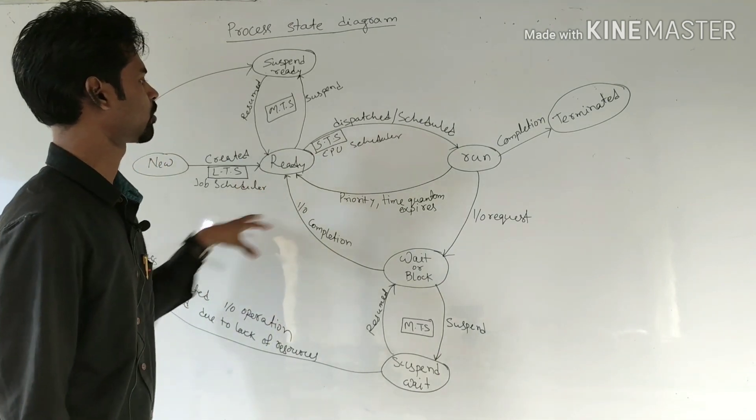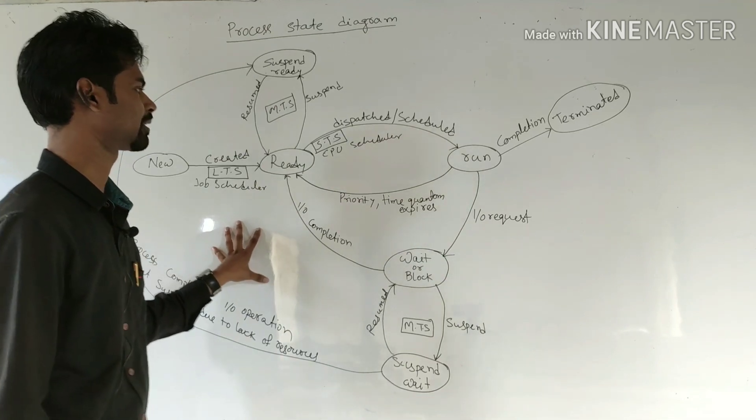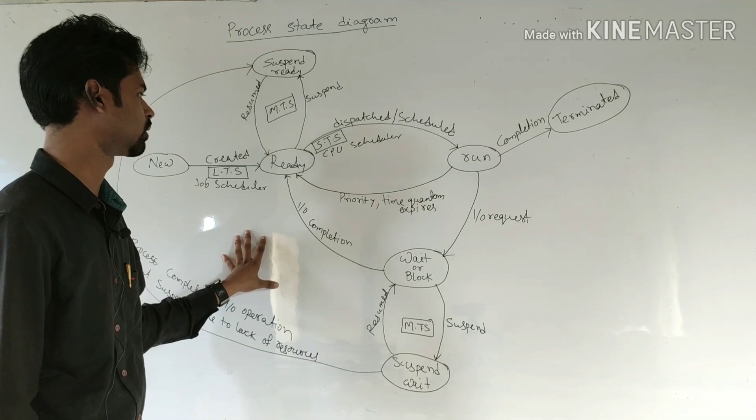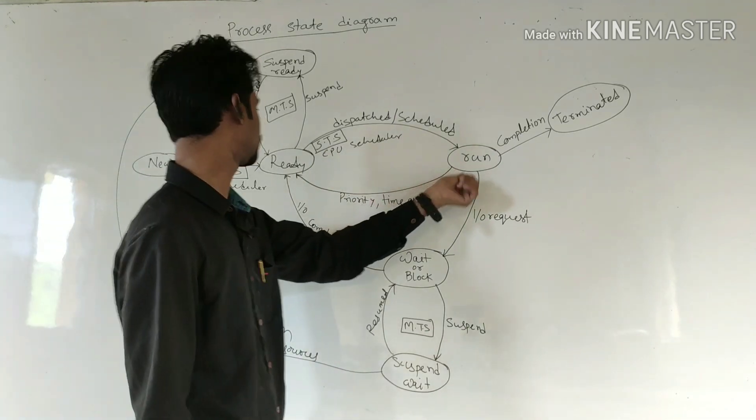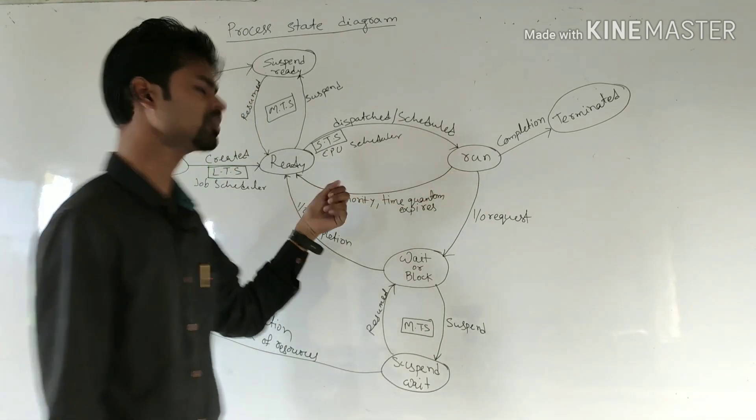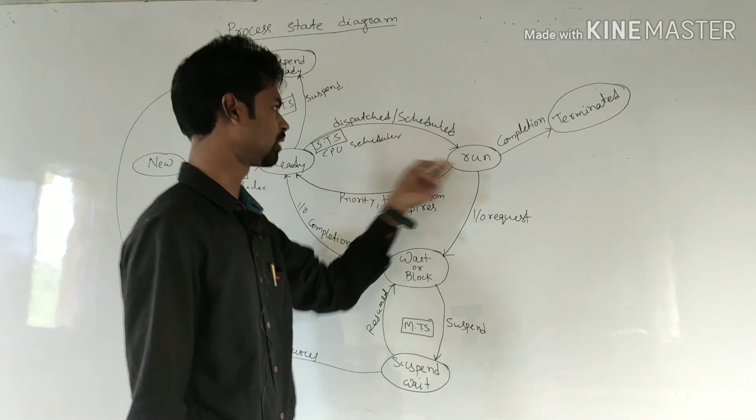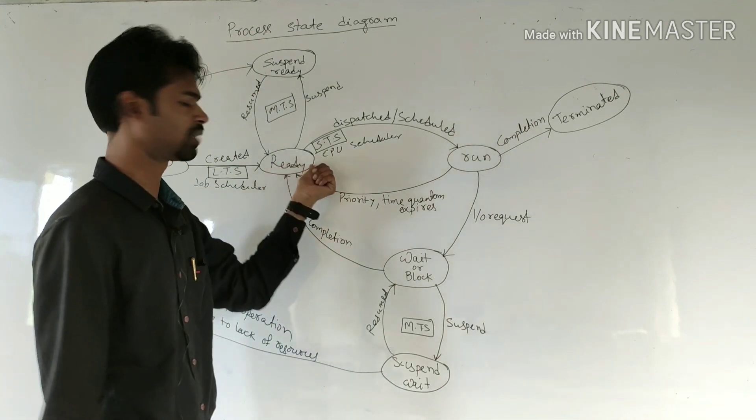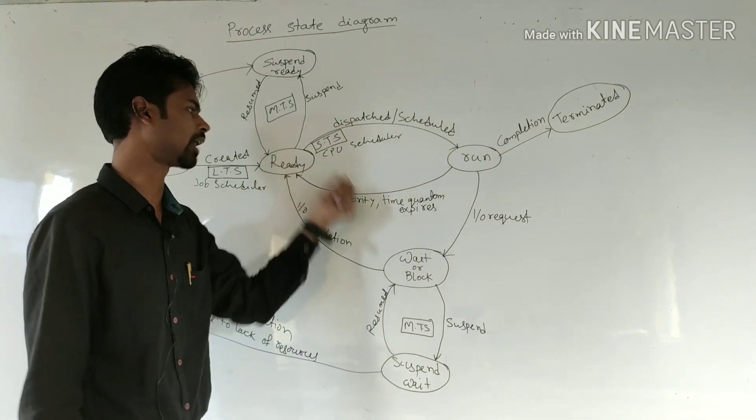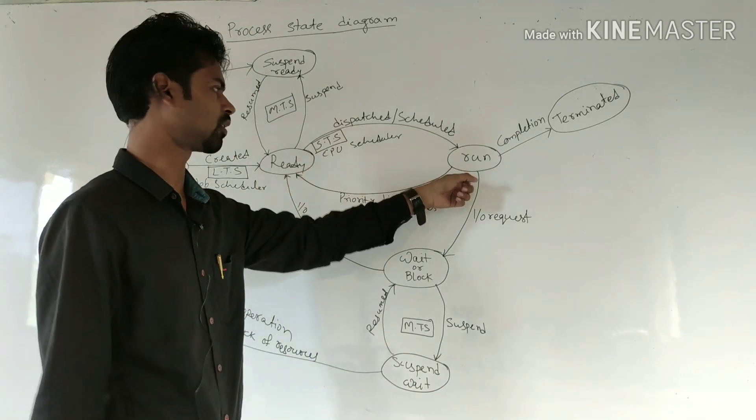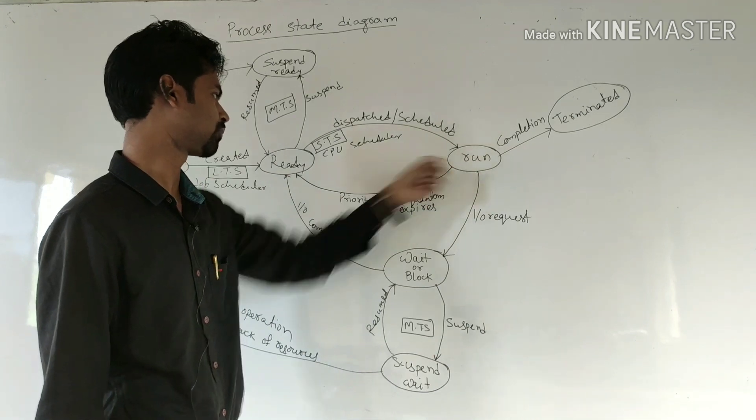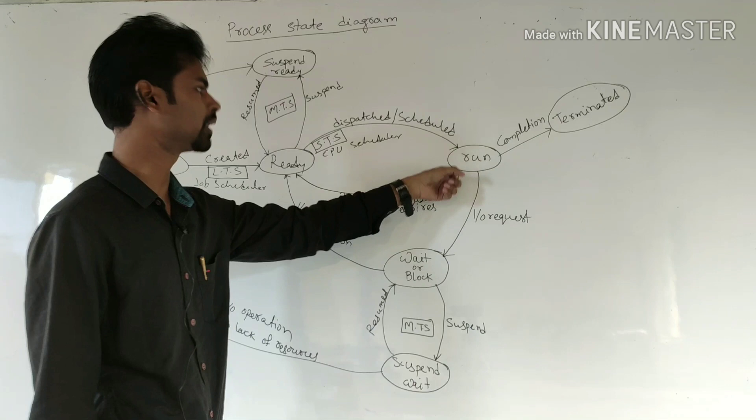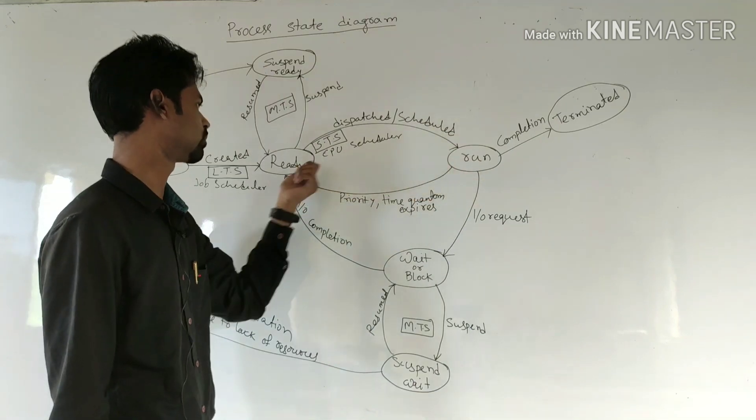This is the entire process of process state or process life cycle. When it will come from run to ready state, there are two cases. If at the time of running, a new process comes and its priority is higher than the running process, then it will be suspended or preempted.